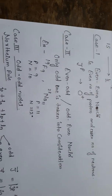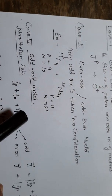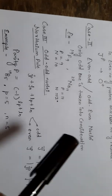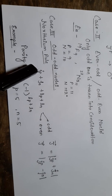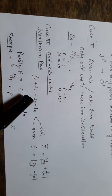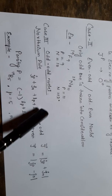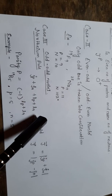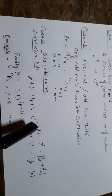For odd-odd nuclei — odd number of protons and odd number of neutrons — we use the Nordheim rule. According to this rule, we find the angular momentum quantum number for the proton, the angular momentum quantum number for the neutron, the orbital angular momentum for the proton, and the orbital angular momentum for the neutron. We then sum these four values, which gives either an odd or even result.